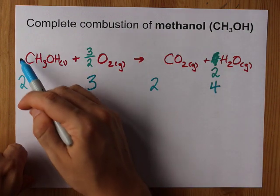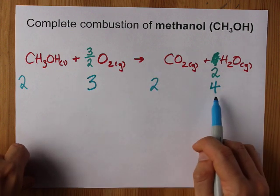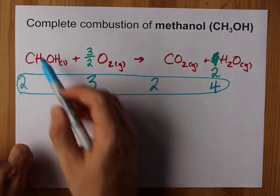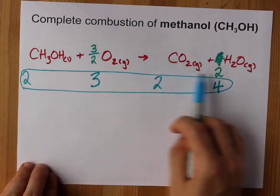The point is that this one doubles to two, one point five doubles to three, one doubles to two, and two doubles to four. These are your whole number coefficients. If you aren't allowed to use fractions, if you are, then it's one, one point five, one, and two.